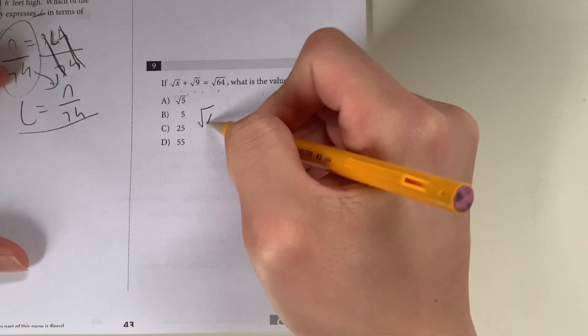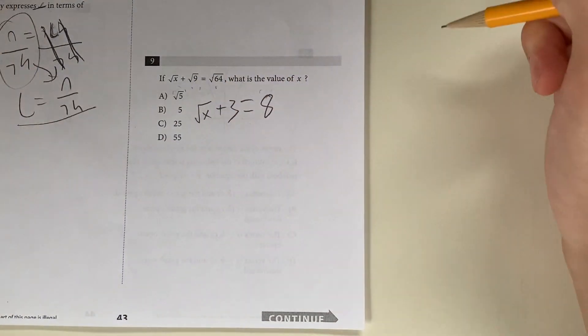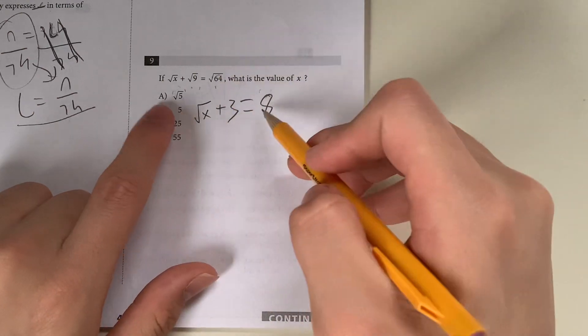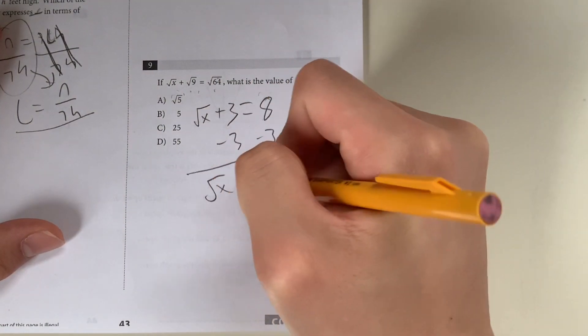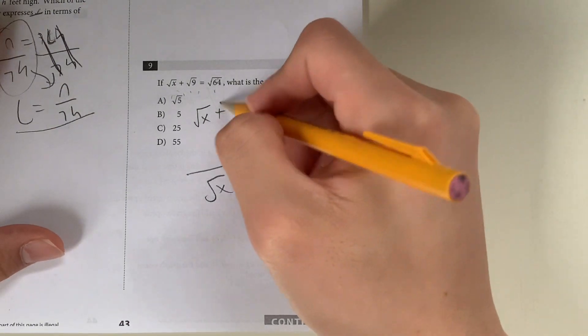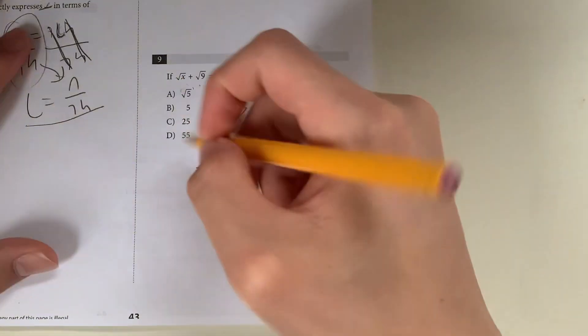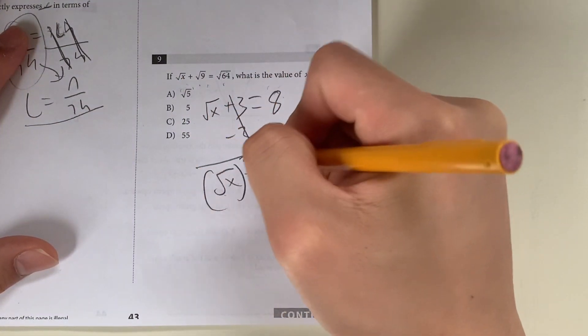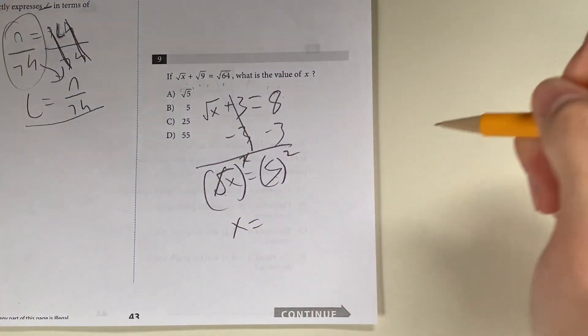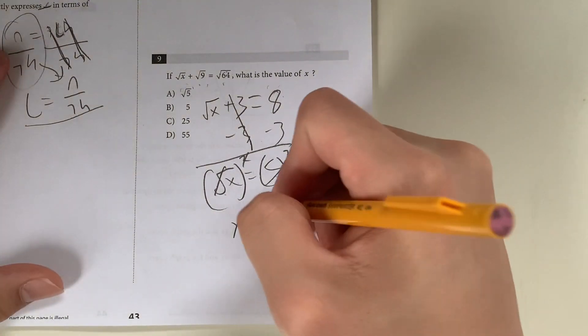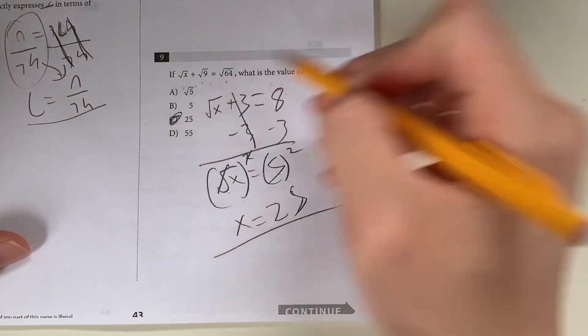Square root of X plus what's the square root of 9? That's equal to 3. That equals the square root of 64, which you guys know is 8. Now we just minus 3 on both sides, giving you the square root of X equals 8 minus 3, which is 5. The square root of X equals 25, you guys probably know it off the top of your head. If you don't, you can just square both sides. X equals 5 squared, which is 25. 5 times 5 is 25, meaning your answer has to be C.